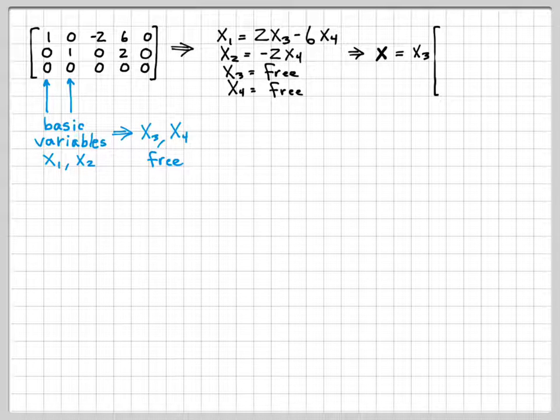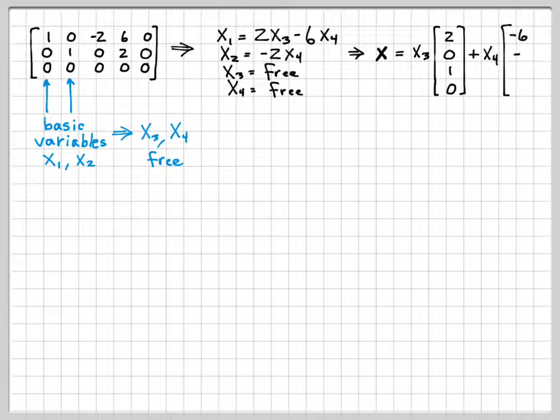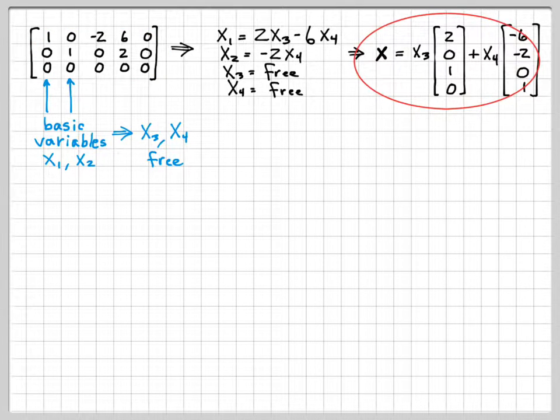The general solution, which I'll go ahead and denote as the vector X, will be equal to X3 times [2, 0, 1, 0], plus X4 times [-6, -2, 0, 1]. So any solution to this augmented matrix is always going to have this form, and you can see what I've done. I've written it in terms of the free variables X3 and X4 just by looking at this side of the equation.